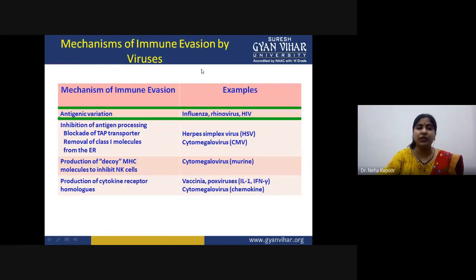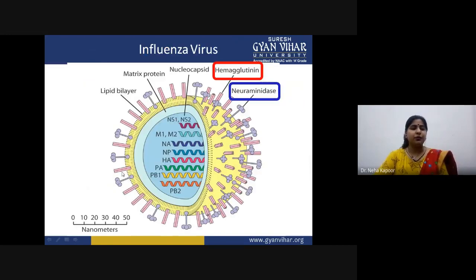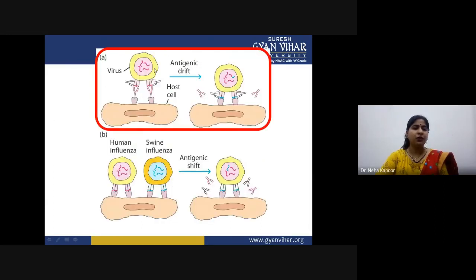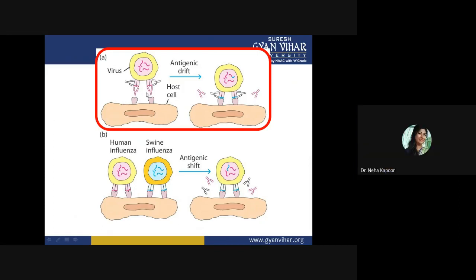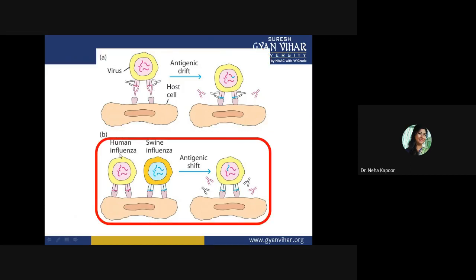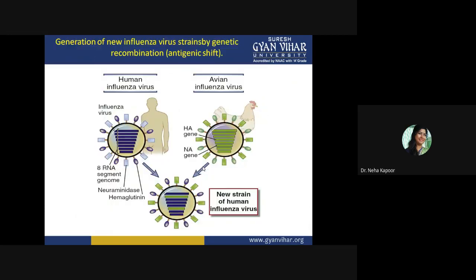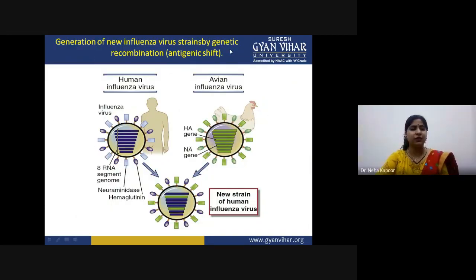These are some immune evasion mechanisms used by viruses with examples. For antigenic variation in influenza virus, HIV, and rhinovirus: on the surface of influenza virus are hemagglutinin and neuraminidase antigenic determinants. In normal conditions, antigenic drift occurs. But in human influenza, using a particular antibody causes antigenic drift, while when they undergo antigenic variation they undergo antigenic shift — which causes more severe infection. A new influenza virus strain results from antigenic shift, combining characteristics of human and avian influenza virus in one strain.